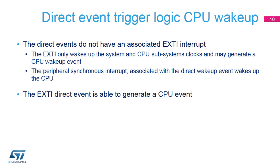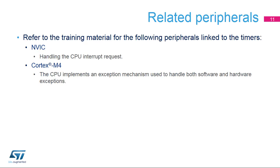A direct event is able, through the EXTI controller, to generate a CPU event and trigger a system wake-up. The active edge of direct events is the rising edge. Direct events do not rely on the EXTI controller to assert interrupt requests because they have their dedicated lines to the NVIC. The same circuit as described in the previous slides is otherwise implemented. Direct events can be independently masked for event generation and interrupt generation. The interrupt mask in the EXTI controller is only used as a wake-up mask.